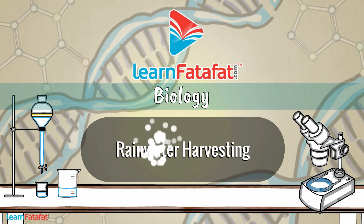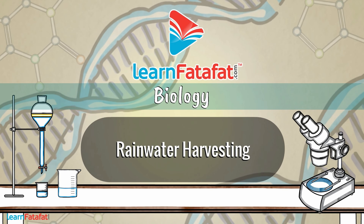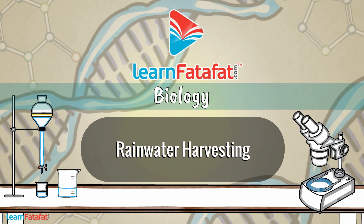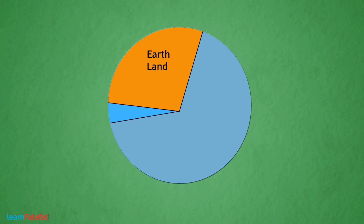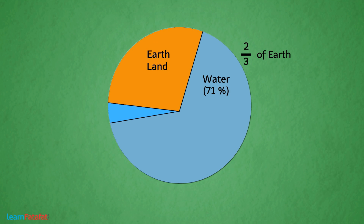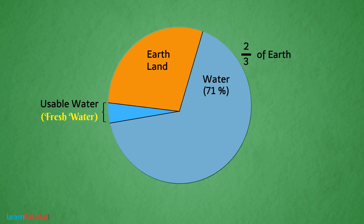Rainwater Harvesting. About two-thirds of Earth's surface is covered with water. However, the amount of usable water is very small.